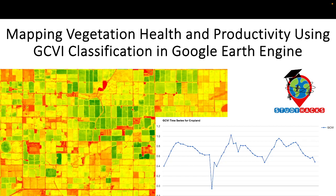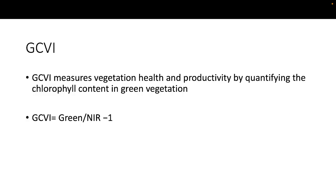First of all, the Green Chlorophyll Vegetation Index is an indicator of vegetation health and productivity. It measures vegetation health and productivity by quantifying the chlorophyll content in green vegetation. The equation used is NIR divided by green minus one. This is the formula for the Green Chlorophyll Vegetation Index and it is a very important indicator for identifying vegetation health and productivity.